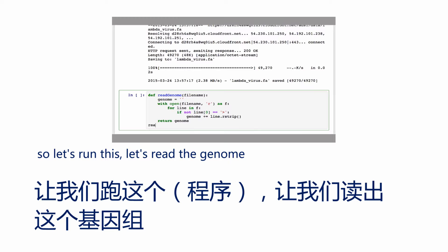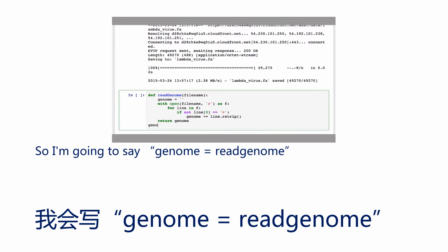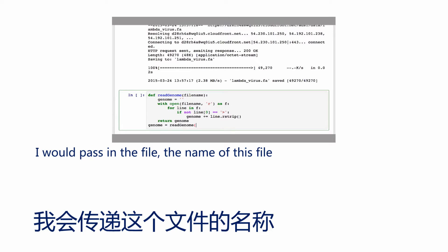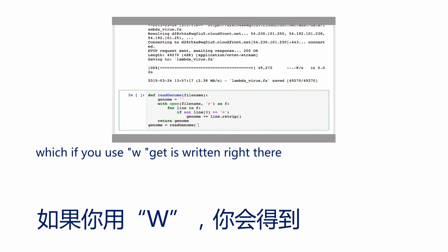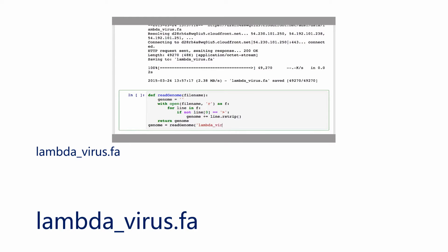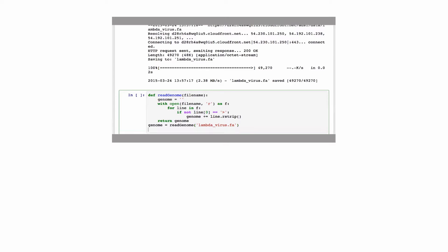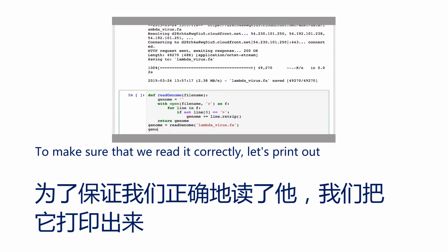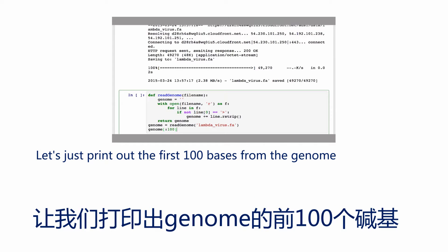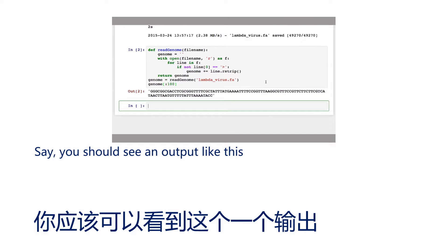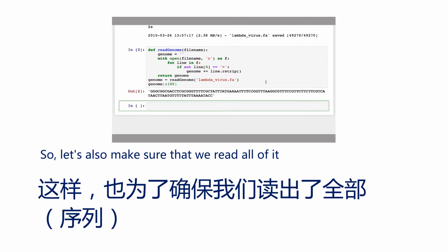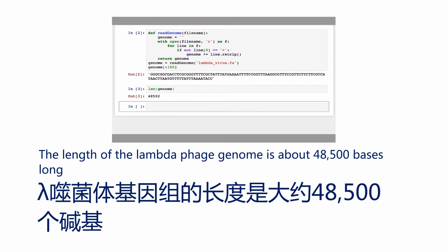Let's run this and read the genome. I'm going to say genome = read_genome() and pass in the name of this file — if you used wget, it is lambda_virus.fa. To make sure we read it correctly, let's print out the first 100 bases of the genome, and you should see an output like this. Let's also check the length of this genome — the length of the lambda phage genome is about 48,500 bases long.